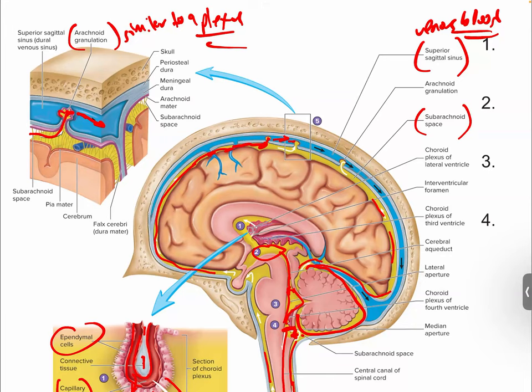This is also why a subdural hematoma is so dangerous — blood pooling in the system will fundamentally block this CSF flow pathway. Not only do you get pressure on the brain, but you also disrupt the flow, so you can't eliminate wastes through your CSF appropriately and efficiently, causing a lot of problems.